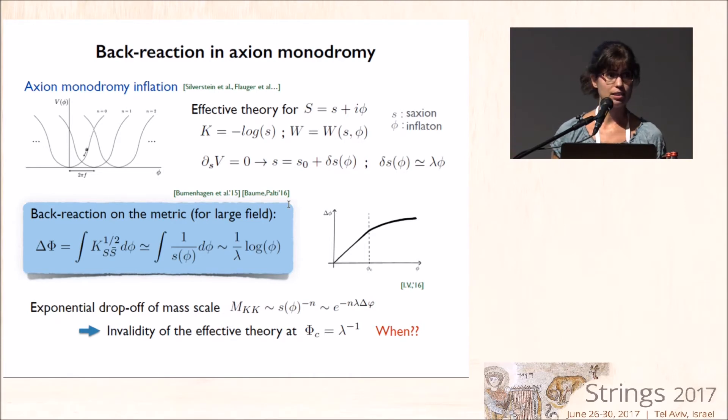Because we will have, again, a tower of states whose mass is parametrized by the saxions, but that will scale in this way with the inflaton, so they will become exponentially light for large field, and they will invalidate the effective theory at a critical value parametrized by lambda, which parametrizes how important are these back reaction effects.